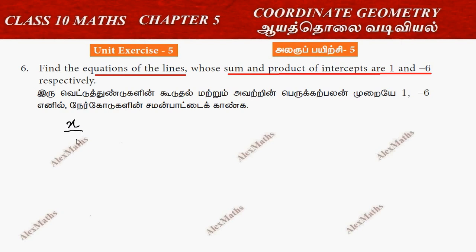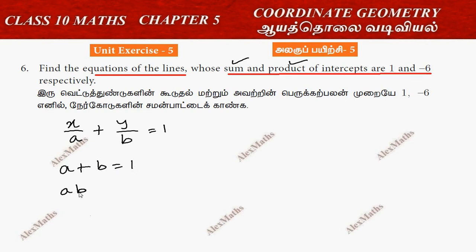We use the intercept formula equation: x by a plus y by b equal to 1. The sum of intercepts, a plus b, is 1, and the product, a times b, is minus 6.